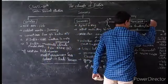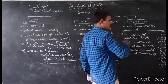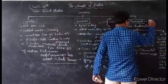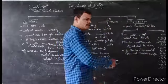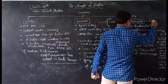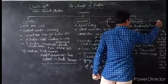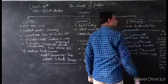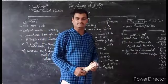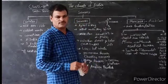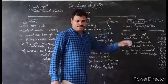The word monsoons came from the Arabic language word 'Mousam,' which means setting of rains. In our country, monsoons are of two types: first is southwest monsoons, with a period of mid-June to mid-September; and the second is northeast monsoons, also called retreating monsoons.